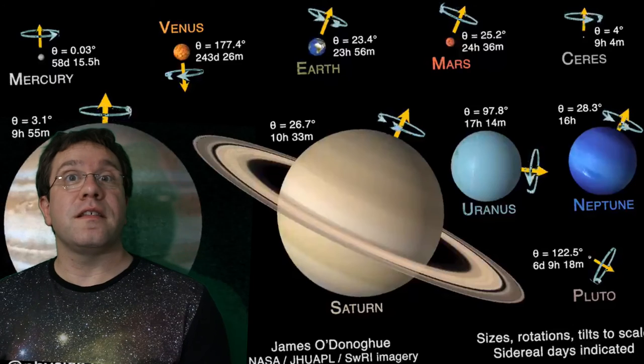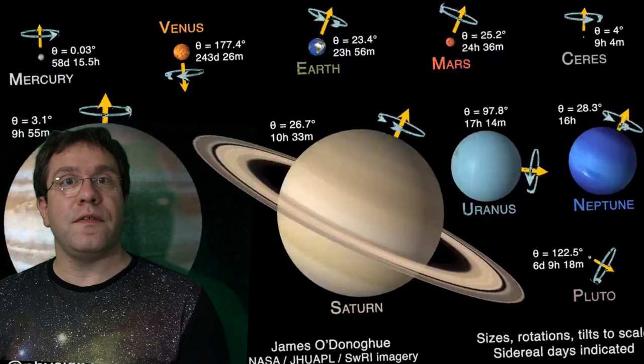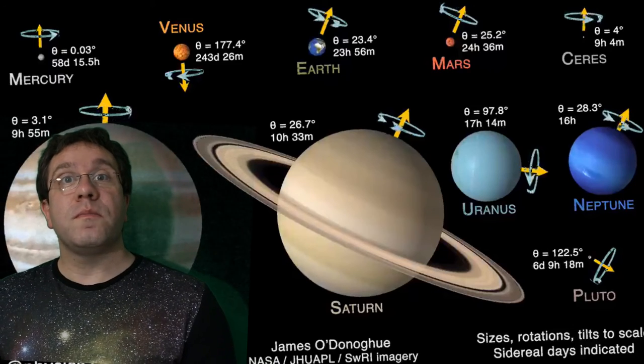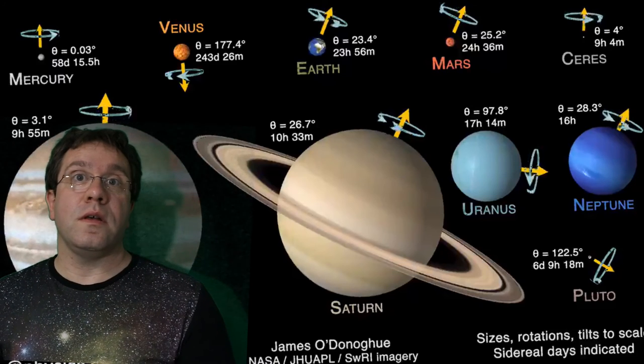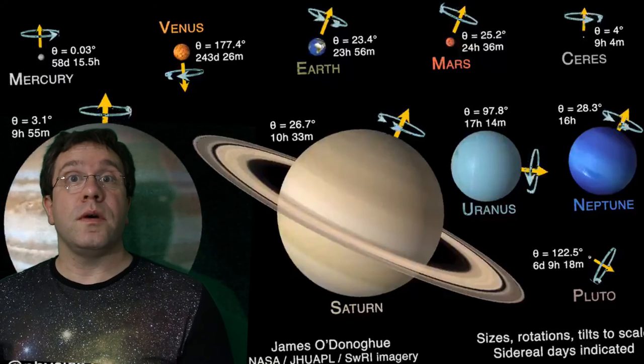The same is true of Saturn. Saturn spins about every 10 and a half hours. Uranus spins on its side—it's tipped over—but it spins about every 16 hours, as does Neptune, the most distant planet.